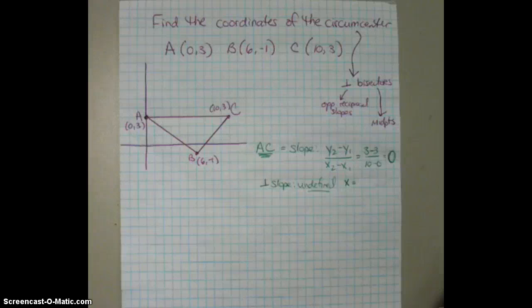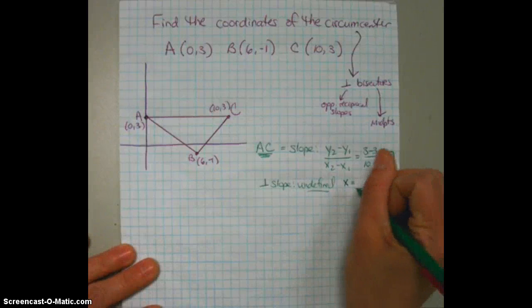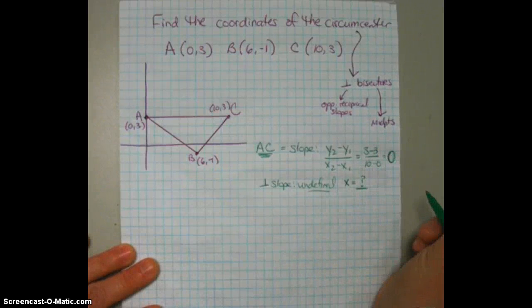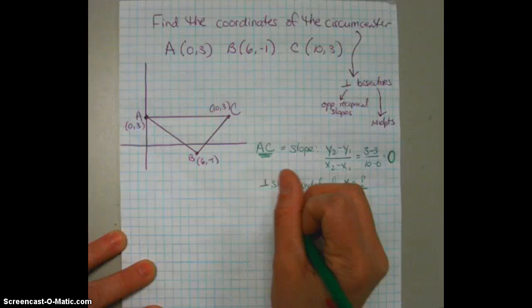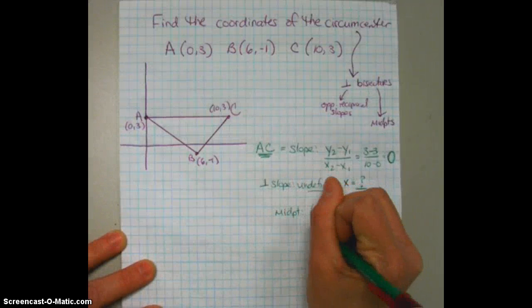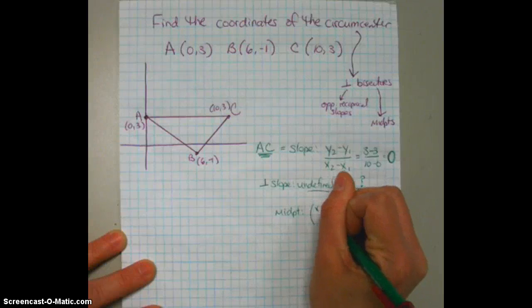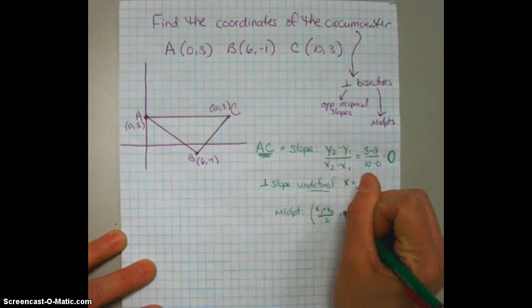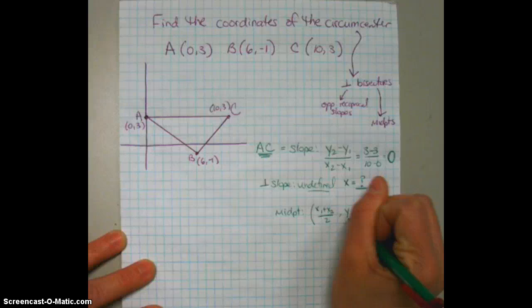And undefined is a vertical line, and vertical lines are written as x equals. Now, we have to figure out what is that x equals going to be. We'll be able to find that out by looking at its midpoint. So the next thing that we have to do for segment AC is find the midpoint. Remember, the midpoint formula is x1 plus x2 over 2, comma, y1 plus y2 over 2.